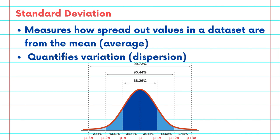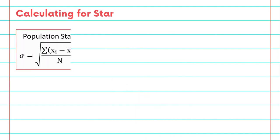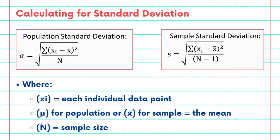So let's look at how we would calculate for it. First we need to start with some formulas. On the left hand side of the screen you can see the formula for standard deviation of a population. This is when you have all of the data for an entire population. On the right side of the screen you'll see the formula for the standard deviation of a sample. This is when you only have a subset of data from your population.